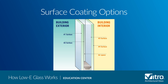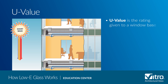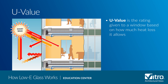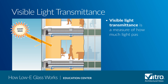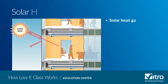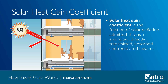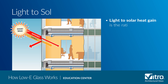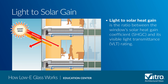Whether a low-e coating is considered passive or solar control, they offer improvements in performance metrics. U-value is the rating given to a window based on how much heat loss it allows. Visible light transmittance is a measure of how much light passes through a window. Solar heat gain coefficient is the fraction of solar radiation admitted through a window — directly transmitted, absorbed, and re-radiated inward — and the lower the value, the less solar heat it transmits. Light to solar heat gain is the ratio between a window's solar heat gain coefficient and its visible light transmittance rating.